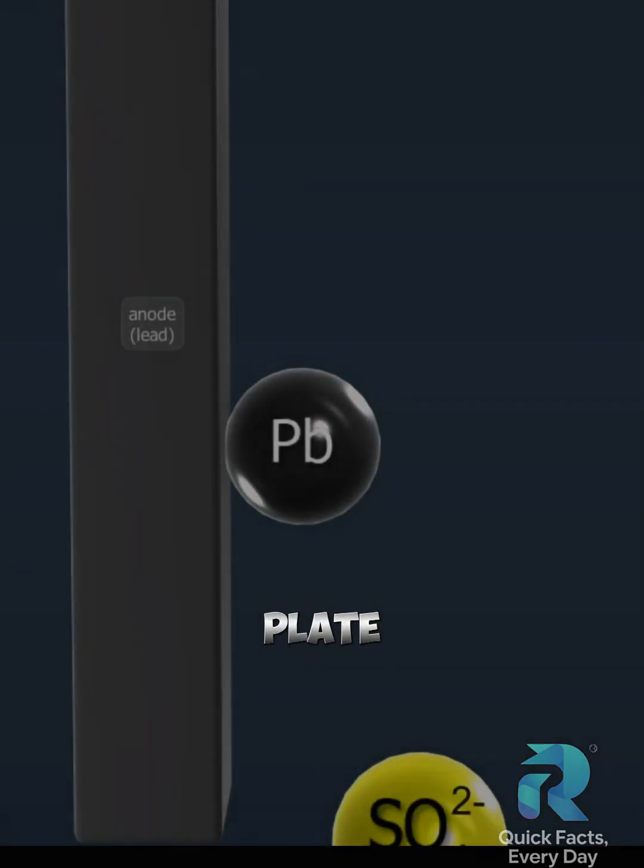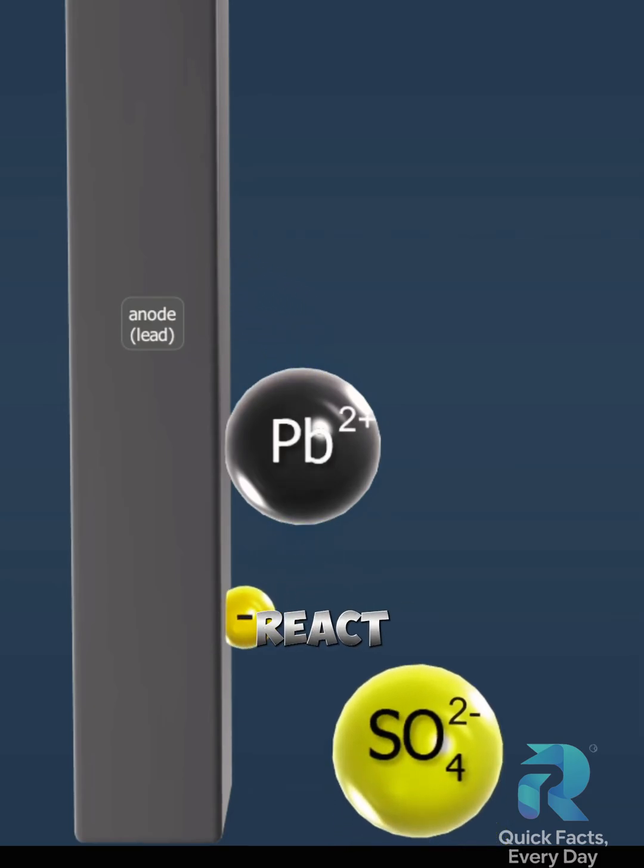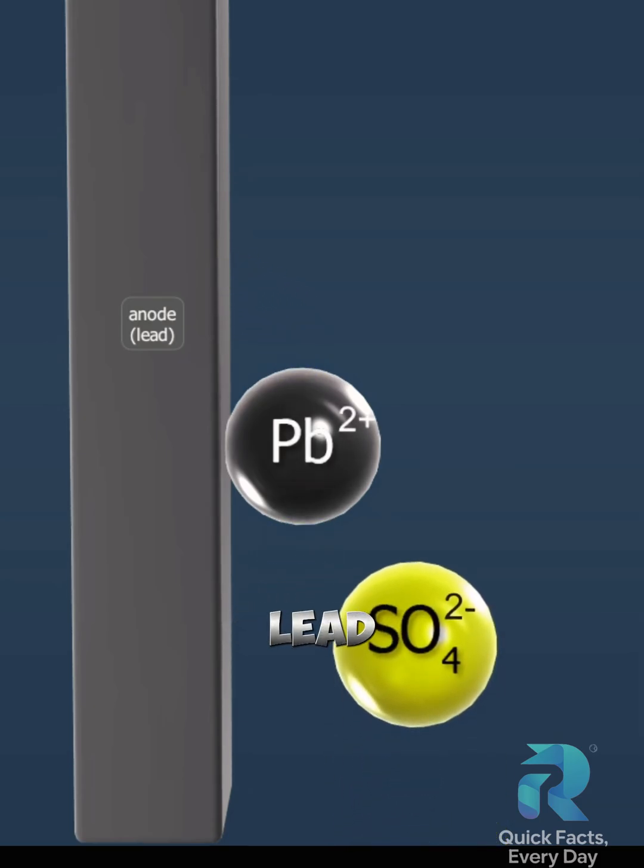During discharge, the lead plate, the anode, releases lead ions, and two electrons are formed. The lead ions react with the sulfuric acid to produce lead sulfate.